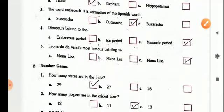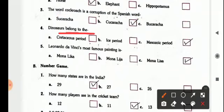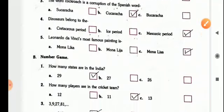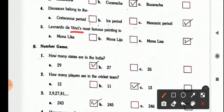Next, dinosaurs belong to the Craticeus period, Ice period or Mesozoic period, so it is Mesozoic period. Now Leonardo da Vinci's most famous painting is Mona Lisa, all spellings are, Mona is same but only liquor.